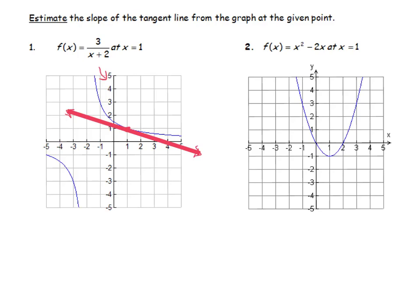And then it looks like it might go through this point here. Let's use a different color. Let's use these two points on our line to estimate that slope. Right, so the slope of that line is my change in y divided by my change in x.